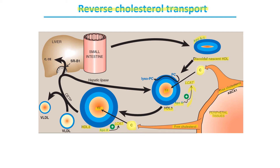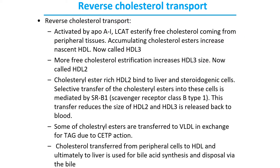HDL2 has now taken up cholesterol from all over the body and returns to the liver cell, where it is broken down. Cholesterol and cholesterol esters are taken out and metabolized by liver cells. HDL2 also exchanges some material with LDL with the help of the CETP protein. The reverse cholesterol transport diagram explains all of this.